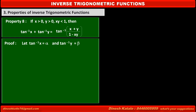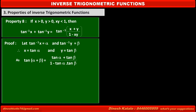Let tan inverse x equal alpha and tan inverse y equal beta. Therefore, we can write x equal to tan alpha and y equal to tan beta. As we know, tan(alpha plus beta) equals tan alpha plus tan beta upon 1 minus tan alpha times tan beta. Substituting the values, we get tan(alpha plus beta) equals x plus y upon 1 minus xy.